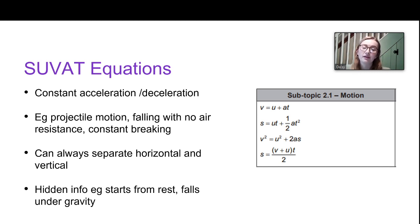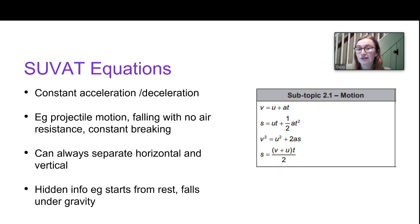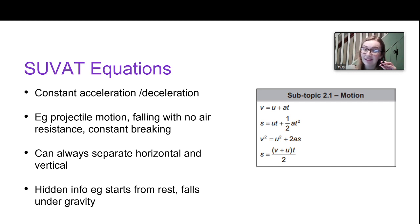A key thing to remember about SUVAT equations is to always resolve into horizontal and vertical components and treat those two completely separately. The IB also likes to hide information in questions — they won't necessarily state S, U, and A directly. For example, 'an object starts from rest' means U equals zero. 'Falling under gravity' means acceleration is ±9.81 m/s², as long as there's no air resistance. Always look out for that kind of hidden information.